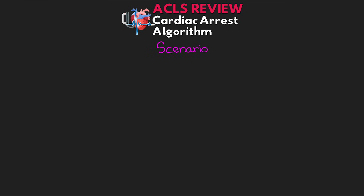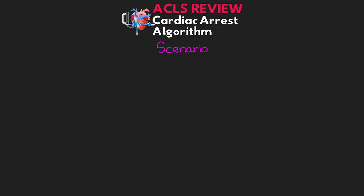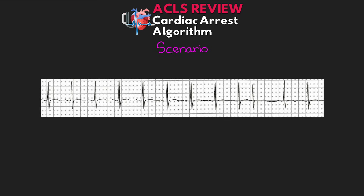After another two minutes of CPR, you do another rhythm check and see V-fib again. Deliver another shock, then immediately go into another round of high-quality CPR. At this point, give a dose of amiodarone — 300 milligrams IV push. Continuing on, after another two minutes of CPR, you do a rhythm check and see a rhythm that looks like normal sinus. Do a pulse check — there's no pulse. This is pulseless electrical activity, or PEA. The patient does not have ROSC, so move over to the right branch and immediately begin high-quality CPR.